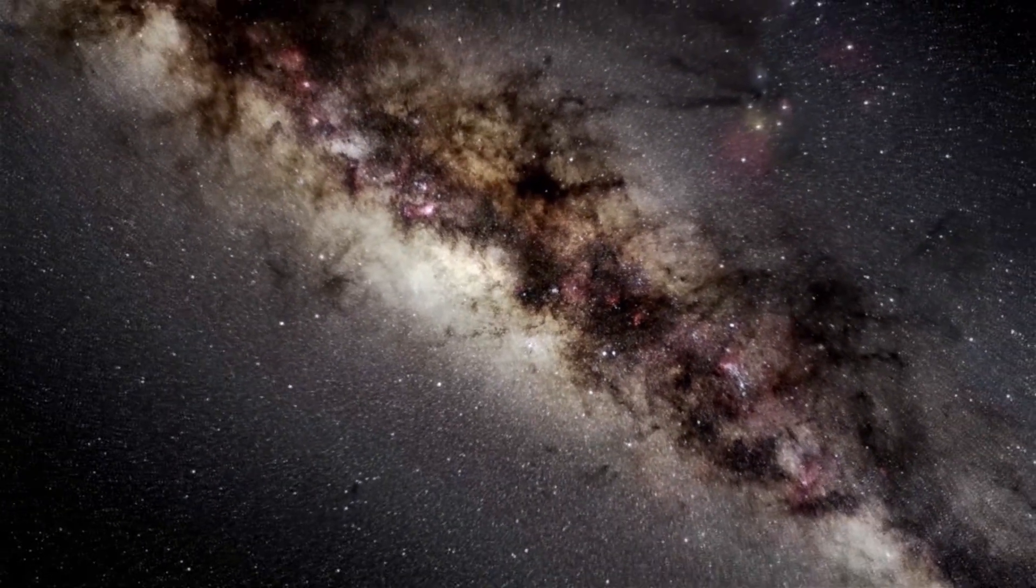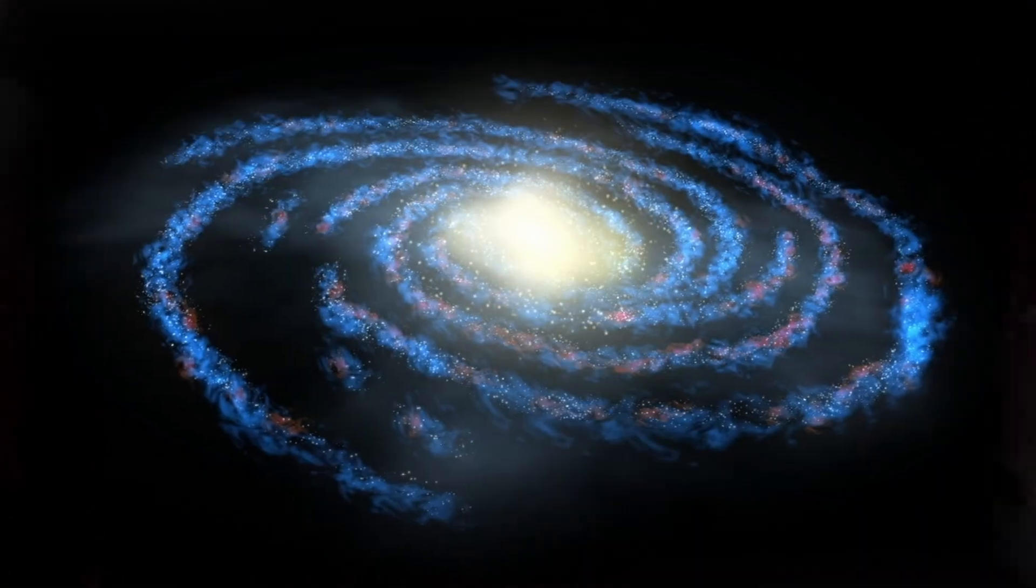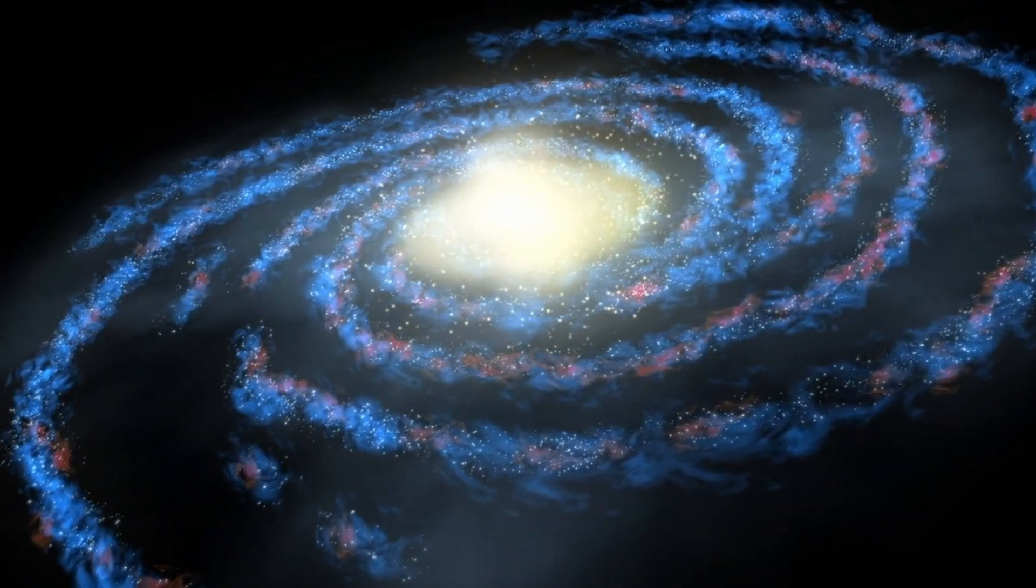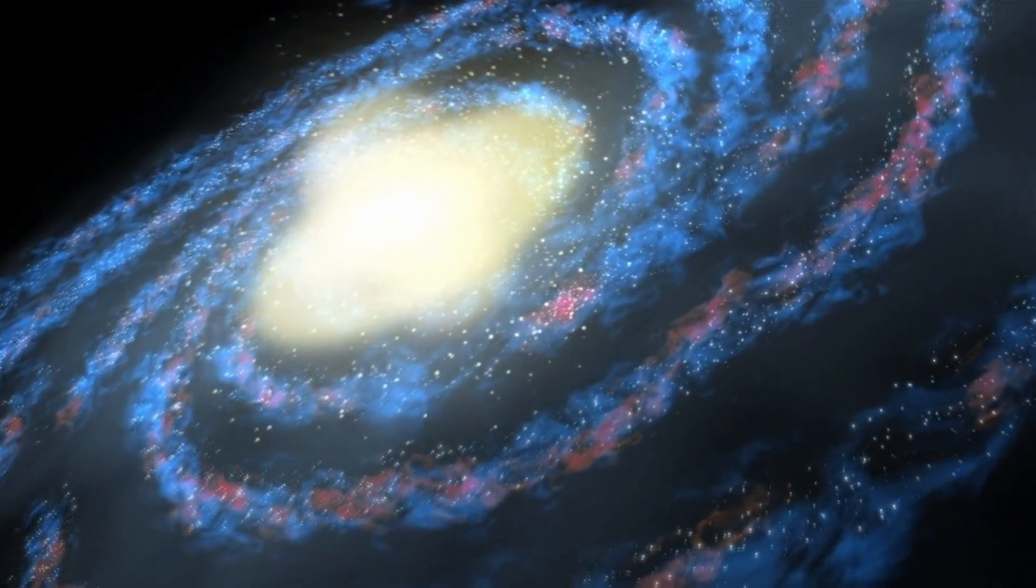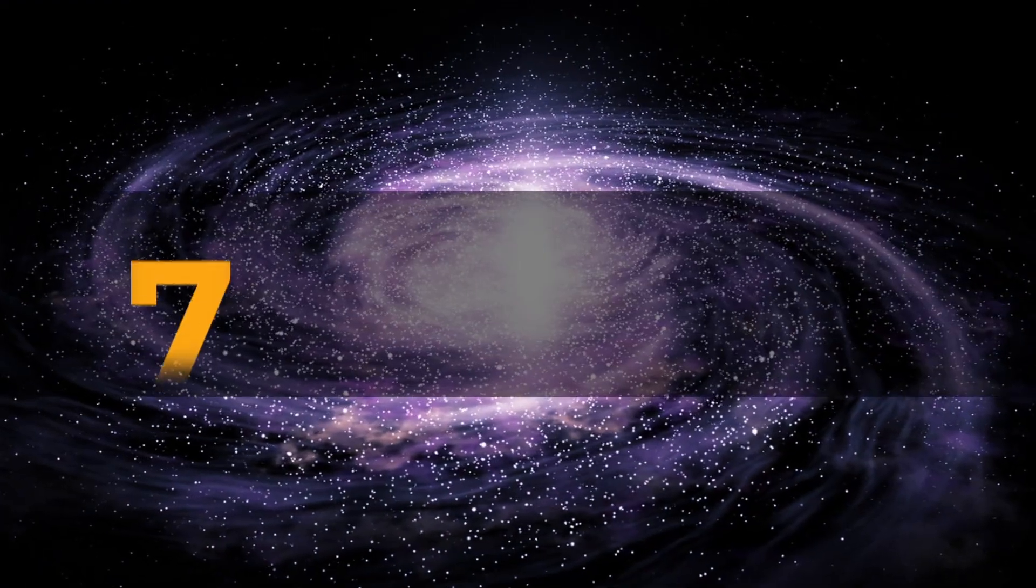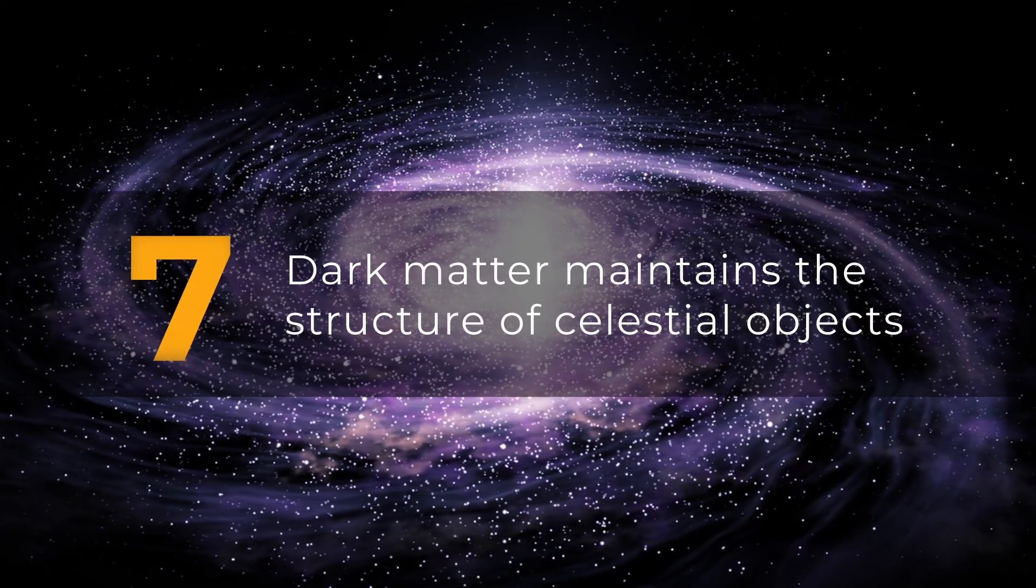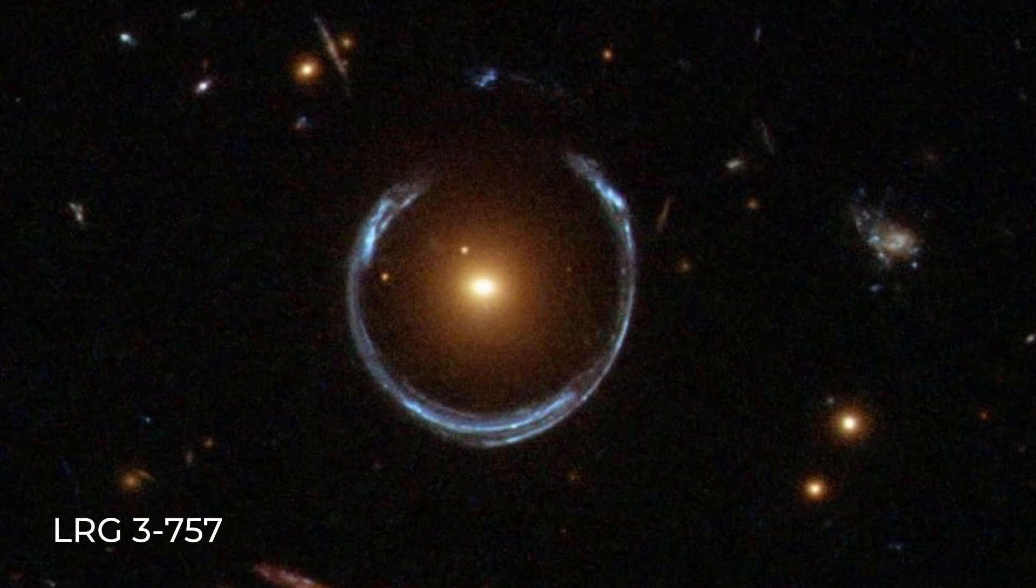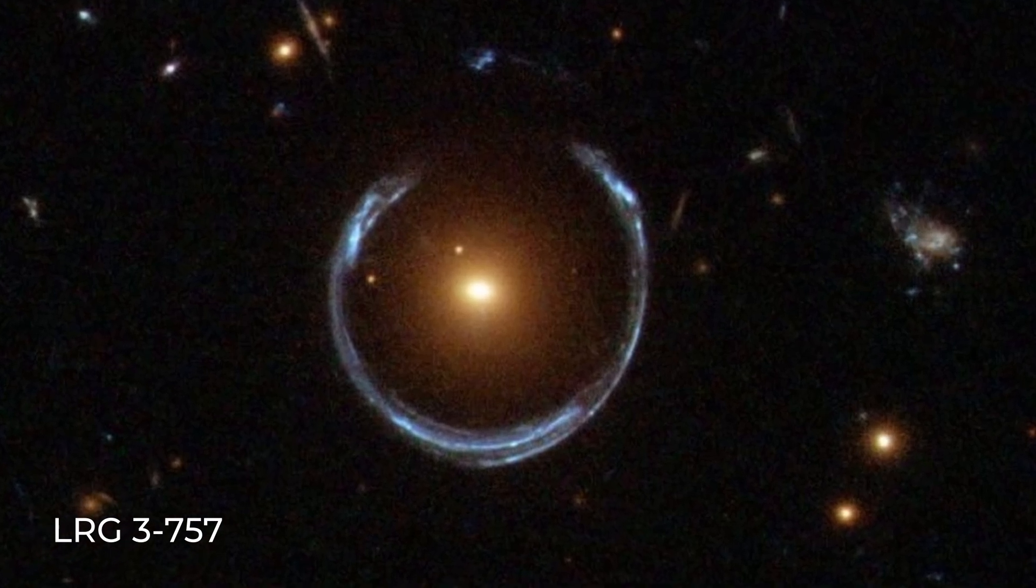In spiral galaxies, like our Milky Way, dark matter's gravitational influence helps stabilize the spiral arms. As the galaxy rotates, the gravitational pull maintains the shape and coherence of the spiral arms. Without dark matter, the spiral arms would quickly wind up and dissolve.